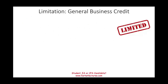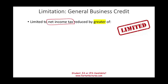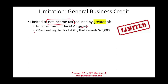The general business tax credit is limited — you might have a lot of credit but you cannot claim all of it. It is limited to the net income tax, reduced by the greater of your tentative minimum tax (AMT) or 25% of net regular tax liability that exceeds $25,000. We will work through an example, but basically you start with your income tax and then reduce it.